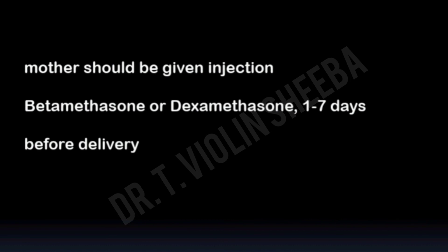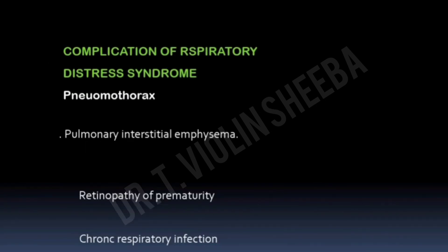Let us discuss the complications of Respiratory Distress Syndrome. The first complication is pneumothorax. There may also be retinopathy of prematurity, chronic respiratory infection, and pulmonary interstitial emphysema. These are the various complications that can occur due to Respiratory Distress Syndrome. I hope this class has been useful for you. Thank you for watching.